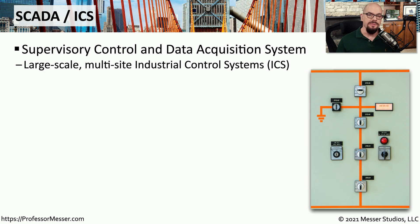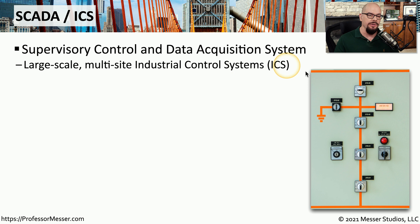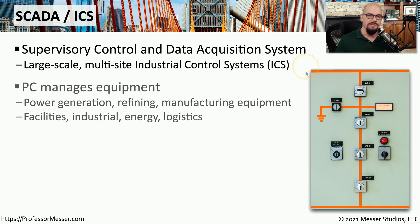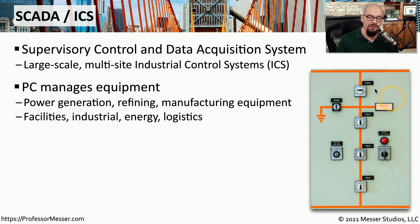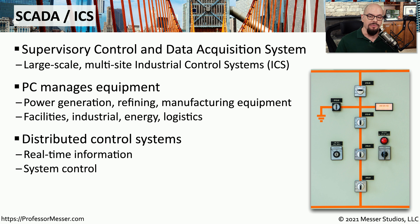Large-scale industrial systems have their own way of networking called SCADA — Supervisory Control and Data Acquisition Systems. You might also hear this referred to as ICS, for Industrial Control Systems. This means you could have a central computer managing all of these systems. Organizations such as power generation, manufacturing, or refining that have large industrial systems can manage them through a centralized network connection. We're usually receiving real-time information from these devices over the SCADA network, and we're able to control them from a central management console.